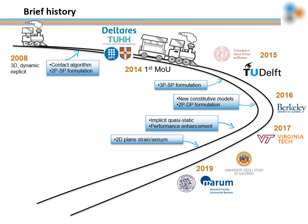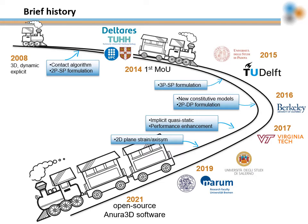Important developments such as multiple-phase hydromechanical formulations are well known in the MPM research field. Historically, the Anura3D software has been shared only within the members of the closed community, but after a transition period since April 30, 2021, the source files are fully open source.